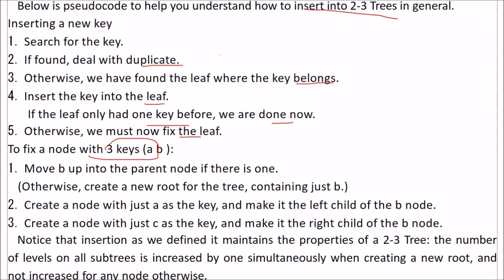To fix a node with three keys, we move the new B, that is the middle one, up into the parent node if there is one. Otherwise, we create a new root for the tree containing just B. We create a node with just A. Consider this to be A, B, C. We create a node with just C as a key and make it the right child of the B node, and this A as the left child.